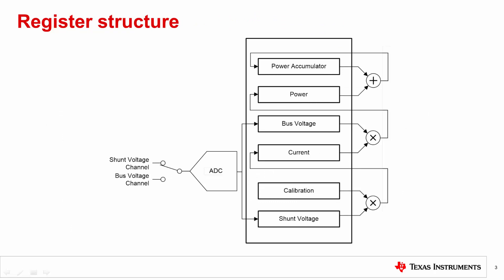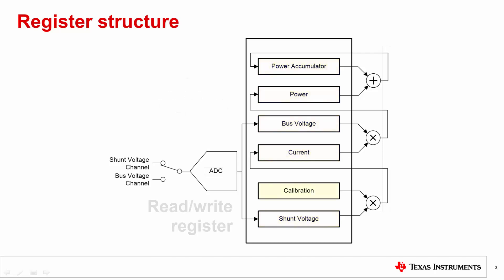Let's take a closer look at the register structure of the digital power monitors. The shunt voltage, bus voltage, current, and power registers are all read-only registers, while a calibration register is a read/write register.